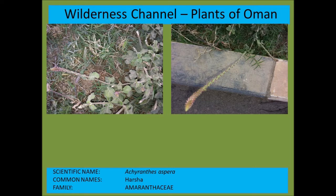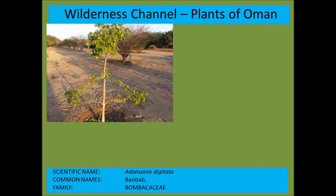Achyranthes aspera is a member of the Amaranthaceae and is a typical weed found in many parts of the world. Adansonia digitata, the Baobab tree, from the Bombacaceae.